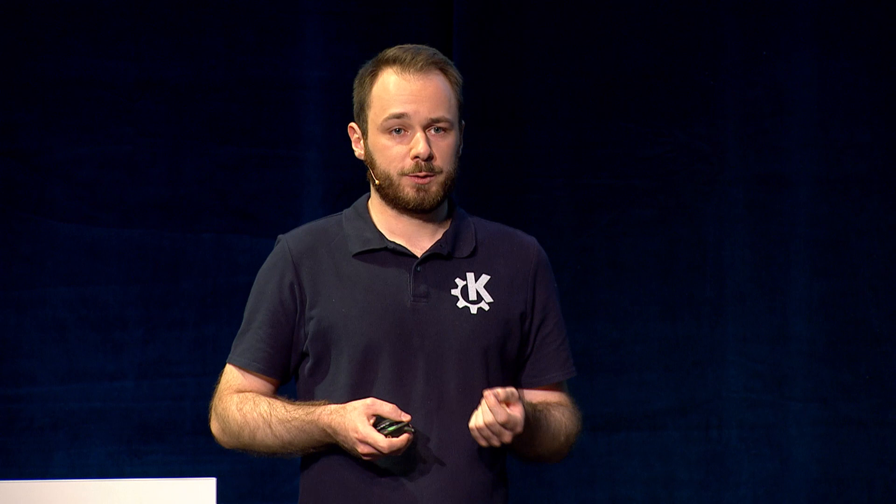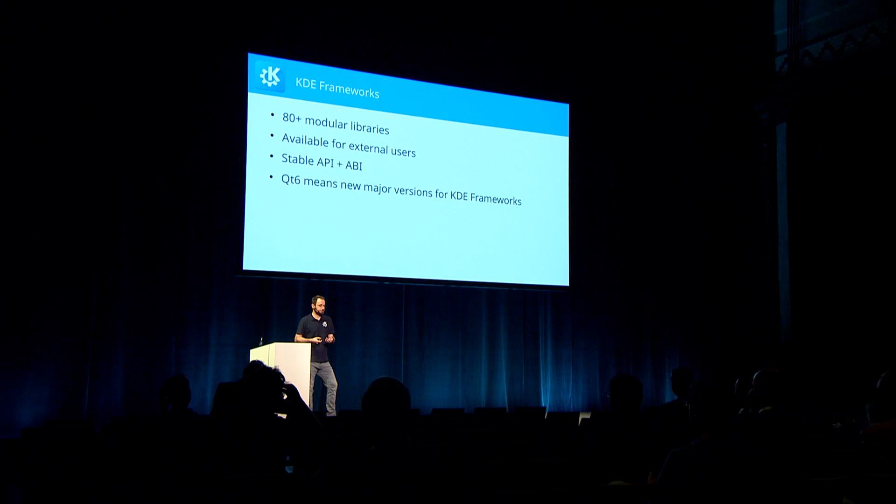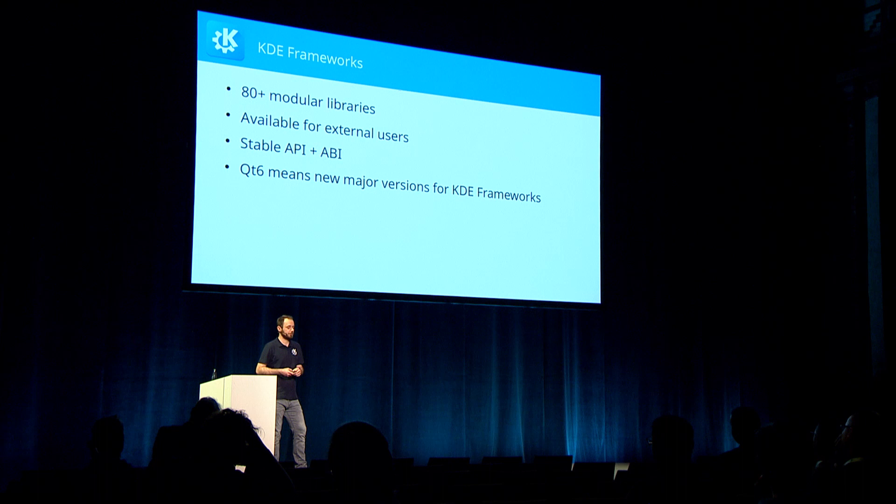In the before times, when KDE was still based on Qt 4, this was one rather large monolithic thing called KDE Libs. In the Qt 4 to Qt 5 transition, we split this up into the 80-something libraries we have now, which makes it much easier to reuse parts for external users. With Qt 6 bringing a new major version, this is a natural point in time to also have KDE Frameworks 6 — a once-in-a-decade opportunity to break compatibility, clean things up, and make the kinds of changes you usually can't do.